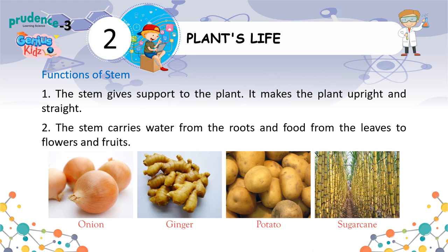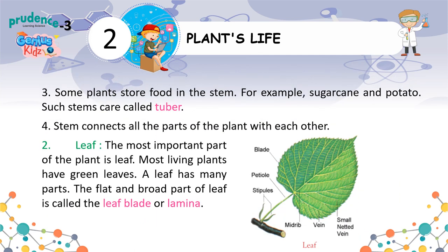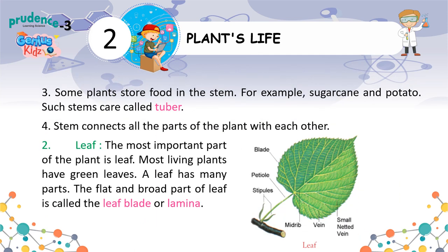Functions of stem. 1. The stem gives support to the plant. It makes the plant upright and straight. 2. The stem carries water from the roots and food from the leaves to flowers and fruits. 3. Some plants store food in the stem. For example, sugarcane and potato. Such stems are called tubers.